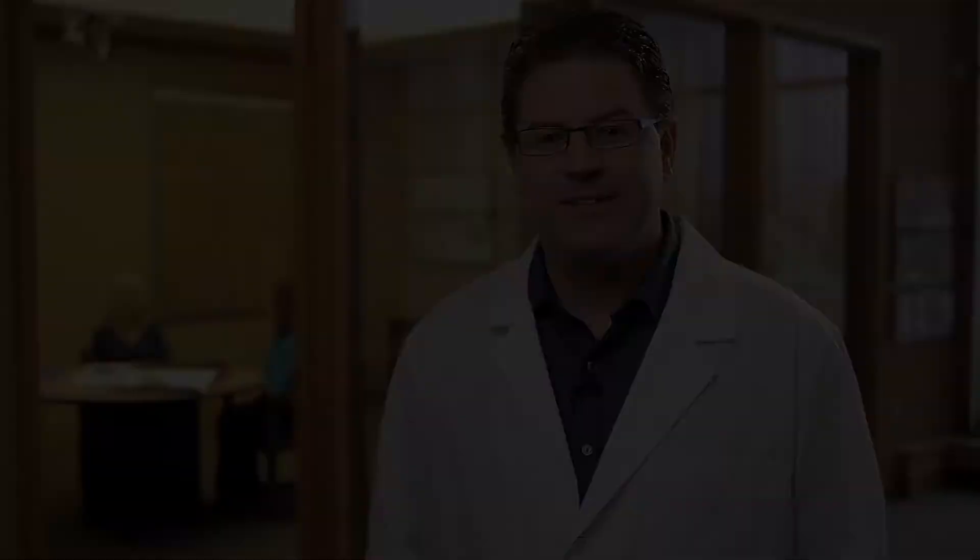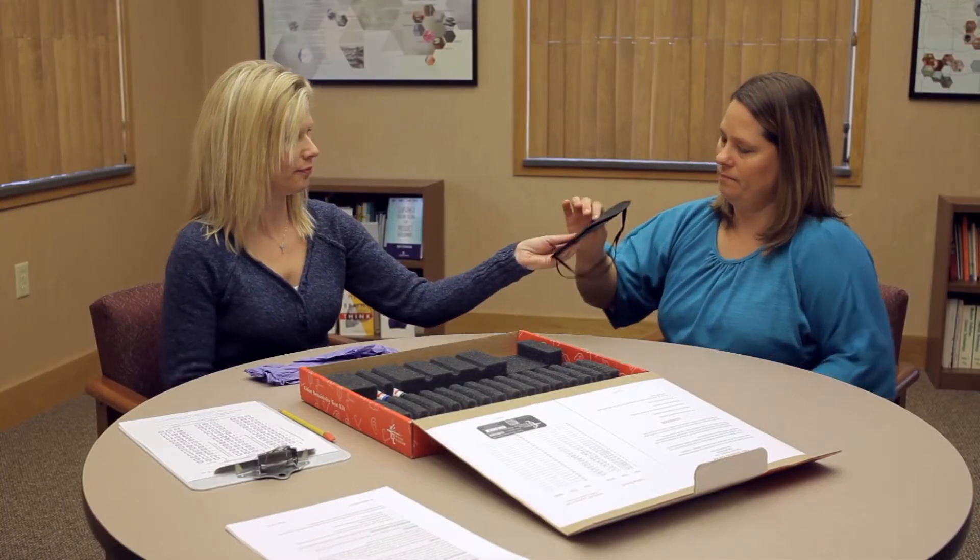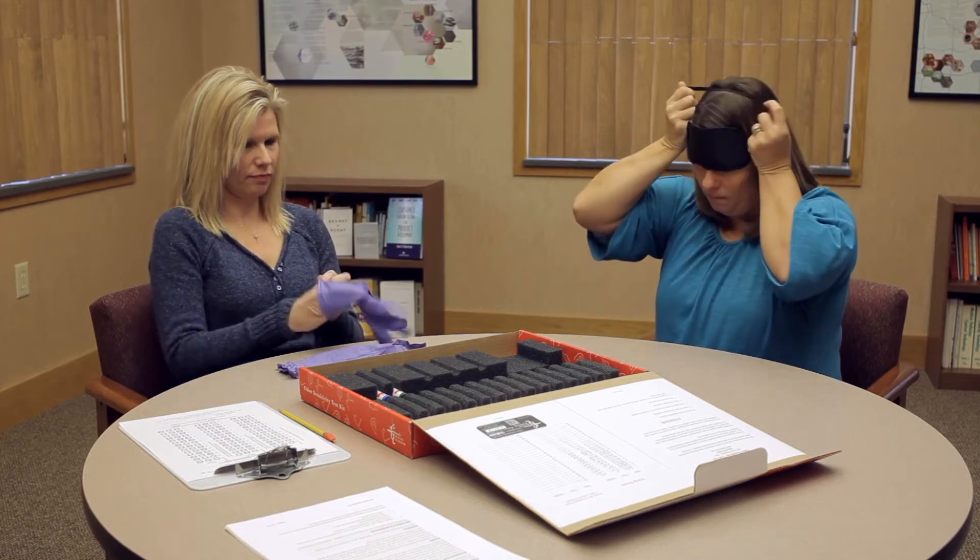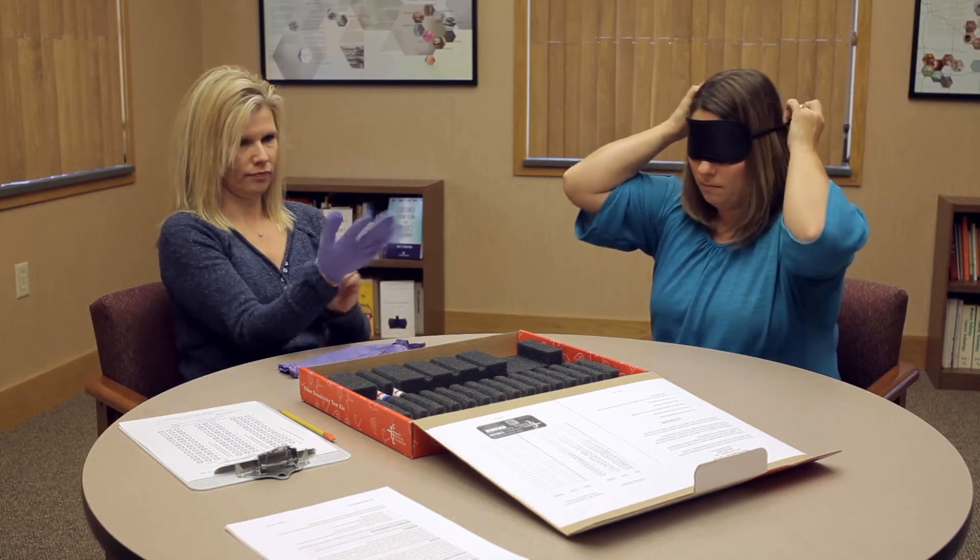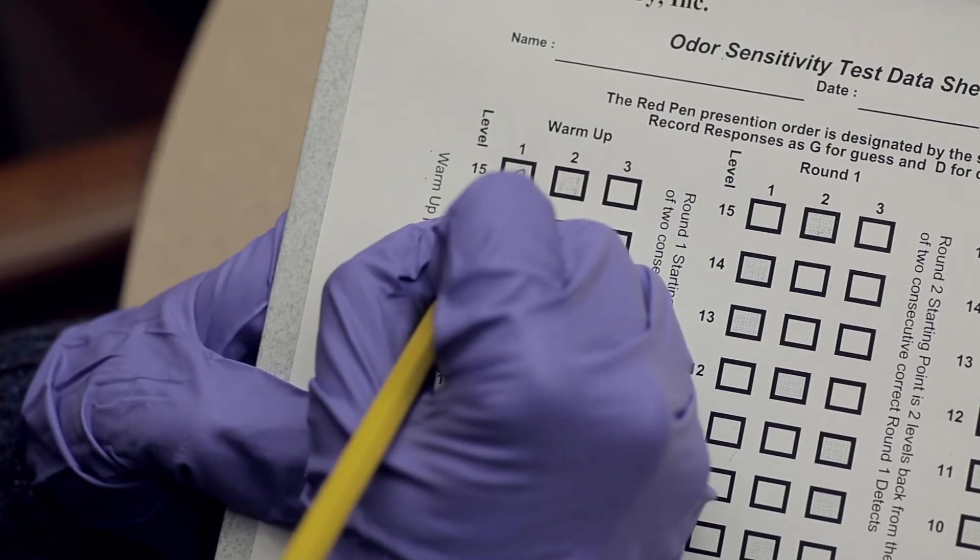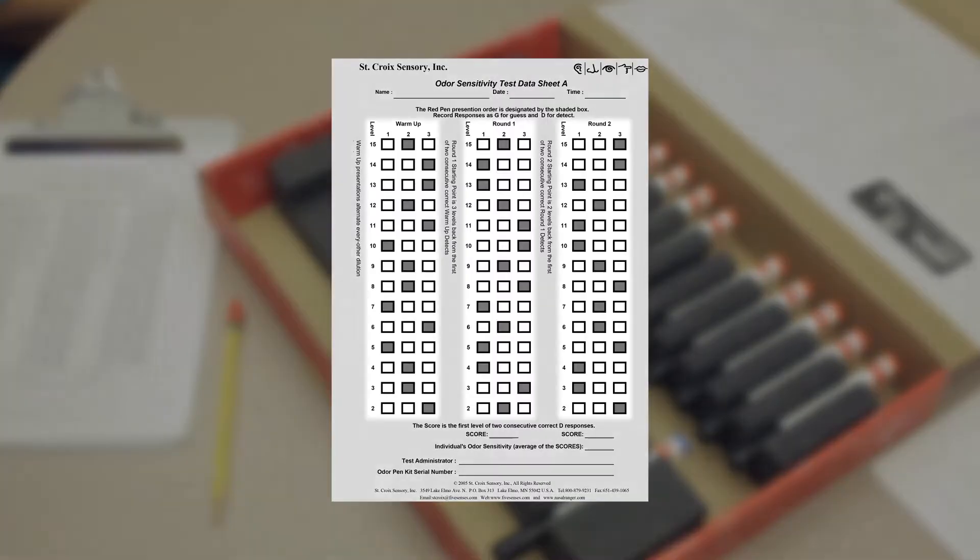Now, I'll walk you through the steps for administering the test. First, you will want to identify a quiet, odor-free space for testing. The test administrator will sit at one side of the table, and the test individual will sit adjacent.